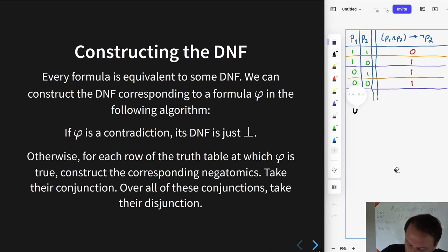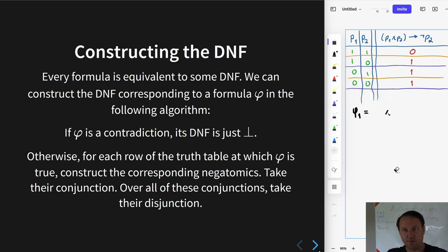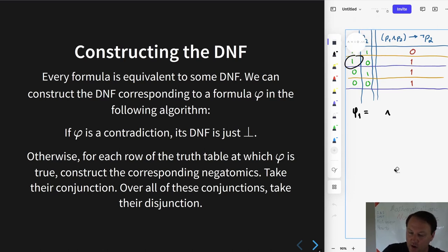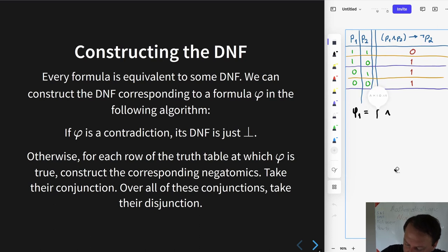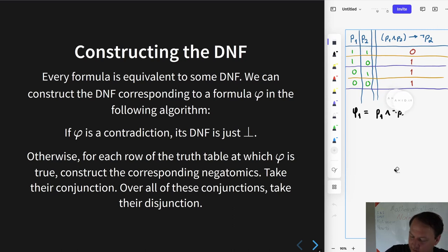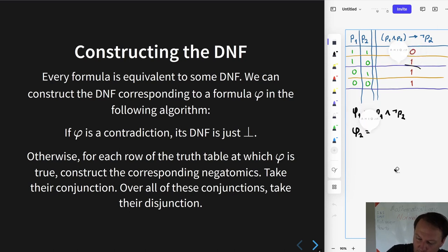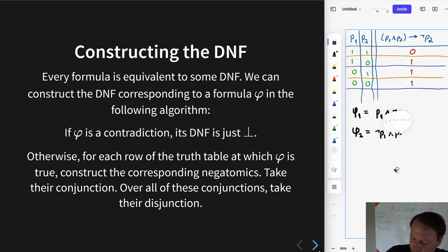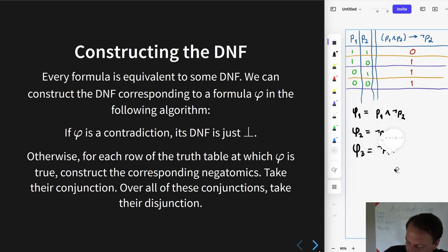φ₁ is going to be a conjunction of negatomics — one for each atom. In this row, wherever the atom is assigned true, I simply copy the atom — so p₁ — and where it's false, I write its negation — so ¬p₂. Correspondingly, φ₂ comes from the next true row: ¬p₁ ∧ p₂. And φ₃ comes from the next: ¬p₁ ∧ ¬p₂.